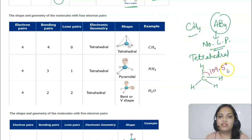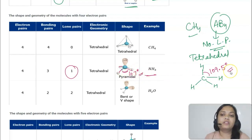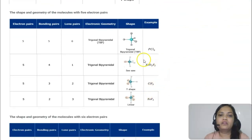If there is one lone pair among four electron pairs, like in ammonia, the three bond pairs and one lone pair interaction reduces the bond angle to 107 degrees from 109.5, giving a pyramidal shape. If there are two lone pairs and two bond pairs, like in water, the molecule has a bent or V shape.